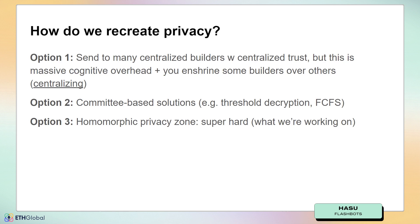The second option is committee-based solutions like threshold encryption or first-come-first-serve — these might also work together. And then option three: the idea of an encrypted mempool, or any system really where different parties share the same type of privacy.